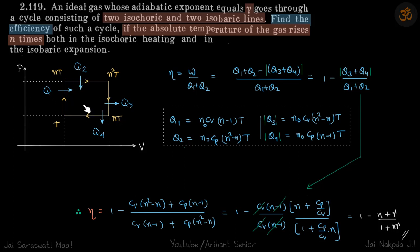We have a process with two isochoric lines and two isobaric lines, and we need to find the efficiency of the cycle. The problem states that the absolute temperature of the gas rises n times both in isochoric heating and in isobaric expansion.